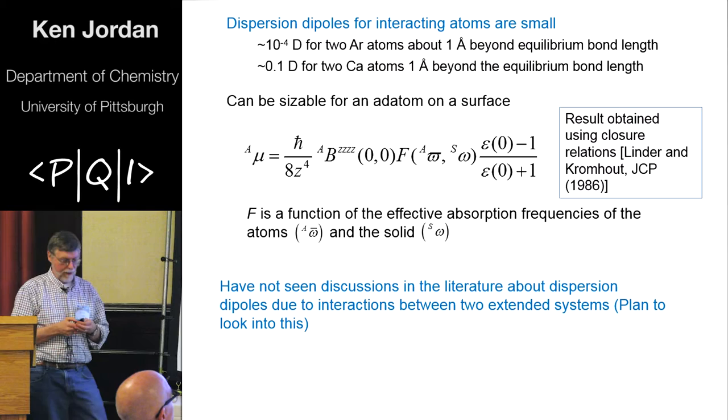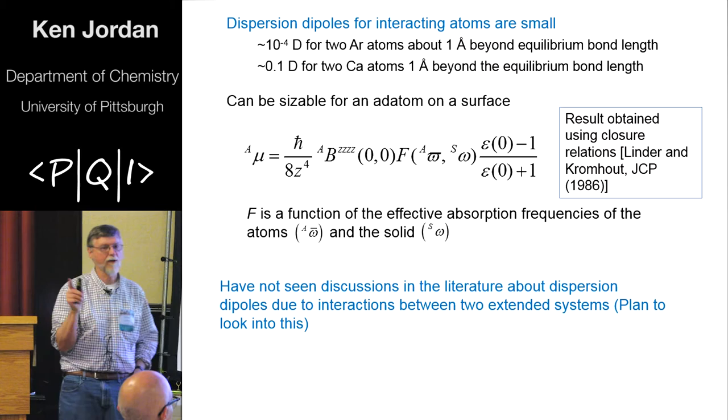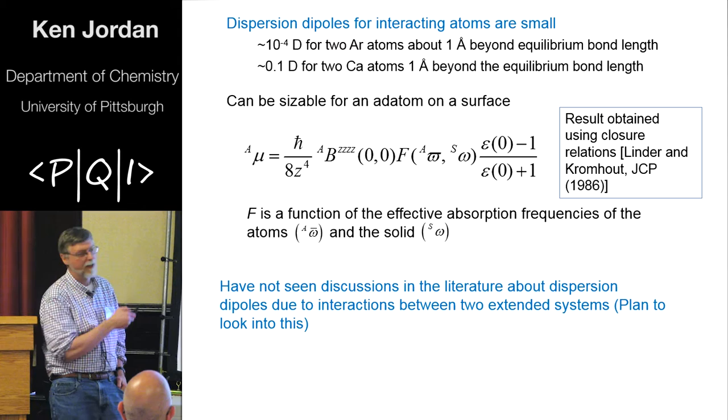Now how big are these dipoles? So if you took two argon atoms, and I'm going one angstrom beyond overlap because I want to really minimize overlap effects. And you work it out, the dipole on each atom would only be 10 to minus 4 Debye, which is really pretty tiny. But if you take a highly polarizable atom like calcium, it turns out it would be about a tenth of a Debye.